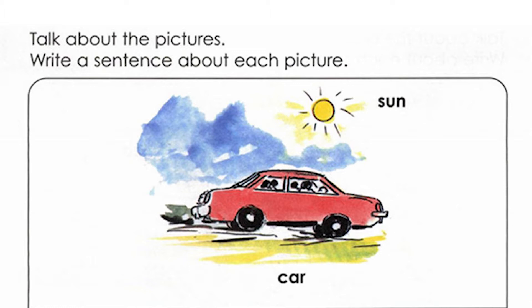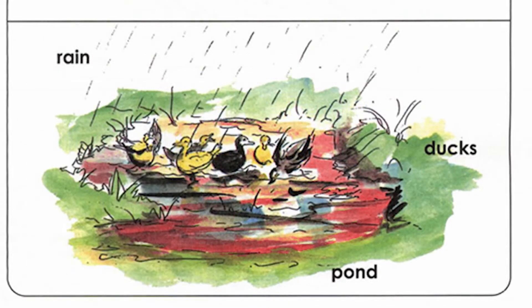Now it is time to write some sentences on picture number two. Before we do that, I want us to examine this picture. In this picture, we have a pond, and in this pond we have some ducks. We can also see that the ducks are having fun in the pond. It is a rainy day — how do we know? We can see the rain falling.